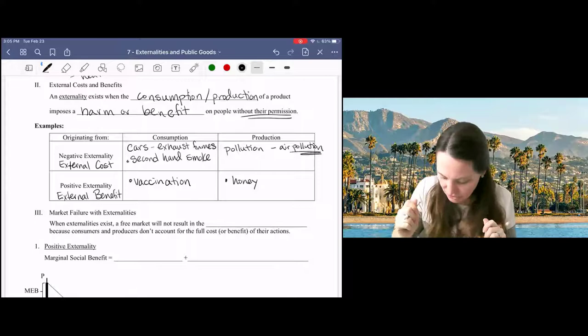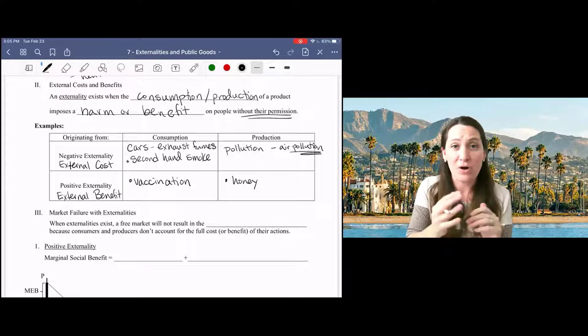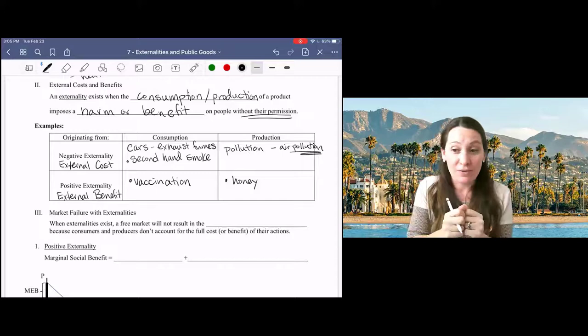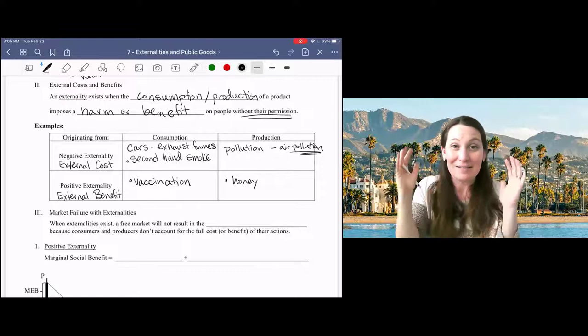So we've given this a good overview here. You can see there's a broad range of costs and benefits from consumption and production and a broad range of scales from global market wide externalities, global warming to very individual cases where someone is annoying me.